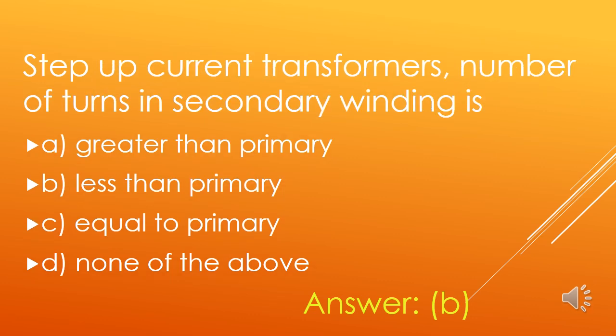In a step-down transformer, the number of turns in the secondary winding is: A. Greater than primary, B. Less than primary, C. Equal to primary, D. None of the above. The relationship between number of turns and voltage is directly proportional, while the relationship between number of turns and current is inversely proportional. So, the number of turns in the secondary winding is less than the primary winding in a step-down transformer. Option B is the right answer.